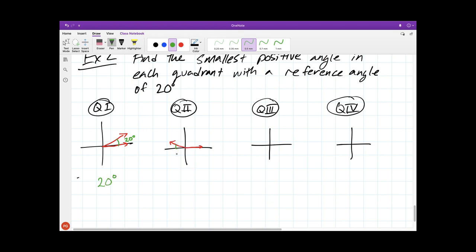For quadrant two, this angle right here needs to be 20 degrees. The angle that we're looking for is all the way from this starting side. So if we know that this has a total of 180 degrees for a whole half turn, this is 20, this needs to be 160 degrees. So our answer would be 160 degrees.